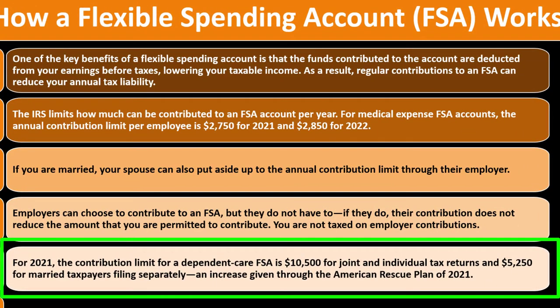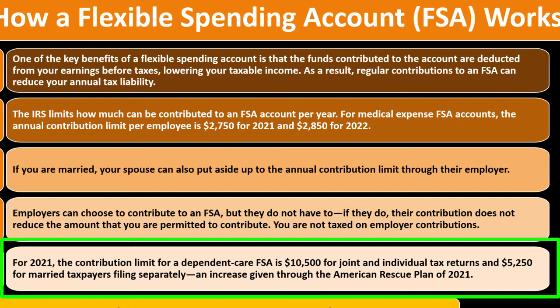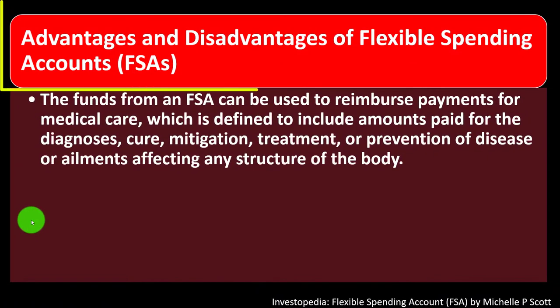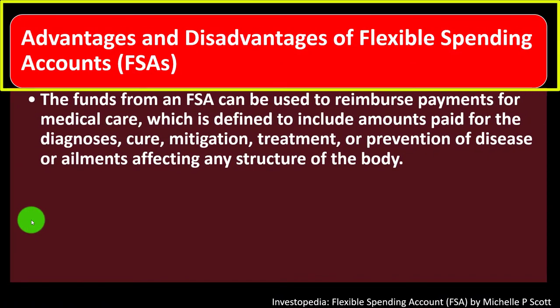For 2021, the contribution limit for a dependent care FSA is $10,500 for joint and individual tax returns and $5,250 for married taxpayers filing separately — an increase provided through the American Rescue Plan of 2021. For 2022, the contribution limit returns to $5,000 for joint and individual tax returns and $2,500 for married taxpayers filing separately.